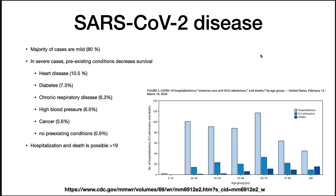The majority of cases of SARS-CoV-2 are mild, with 80% never progressing to severe illness. In severe cases, pre-existing conditions decrease survival. The CDC examined data from reports of 2,449 patients. Of these, 508 required hospitalization, and the outcomes in these patients appear on the chart.